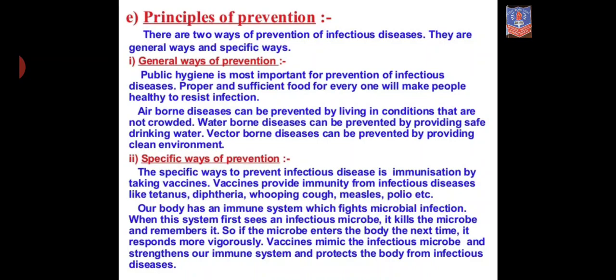Similarly, the COVID-19 vaccine works the same way: if the COVID-19 virus comes to our body, our body will fight it and we will not develop the disease. This is called the immune system. The specific way of prevention is immunization by taking vaccines. Immunization means to strengthen our immune system — the disease-fighting system. Vaccines provide immunity from infectious diseases like tetanus, diphtheria, whooping cough, measles, and polio.